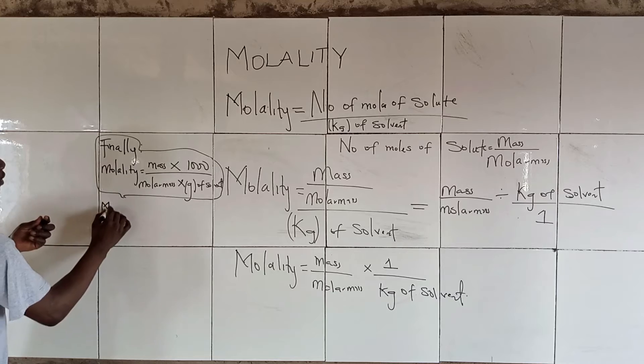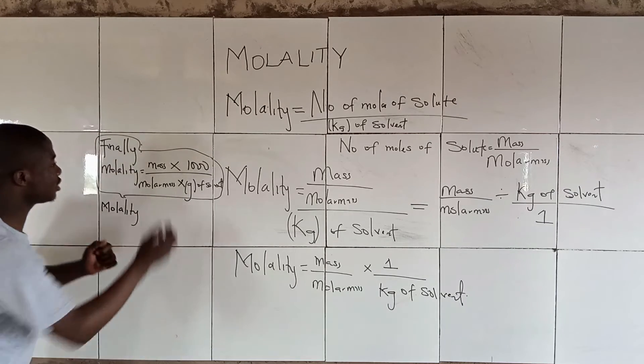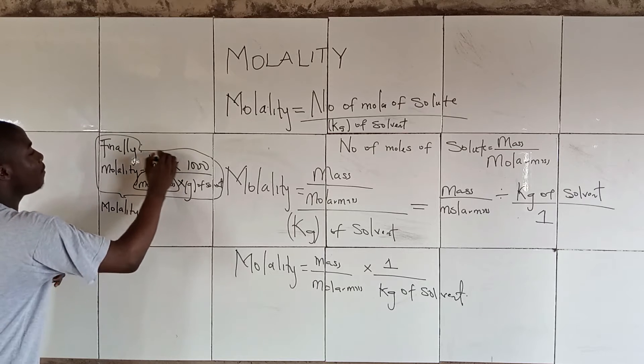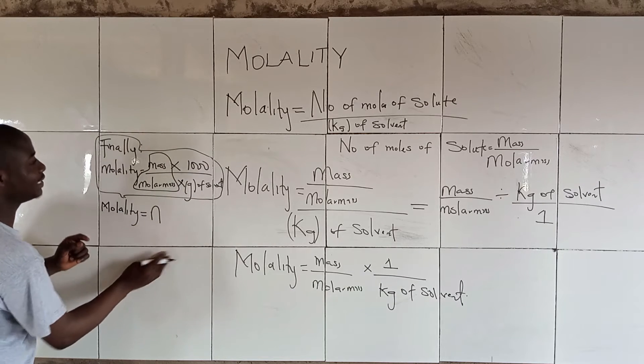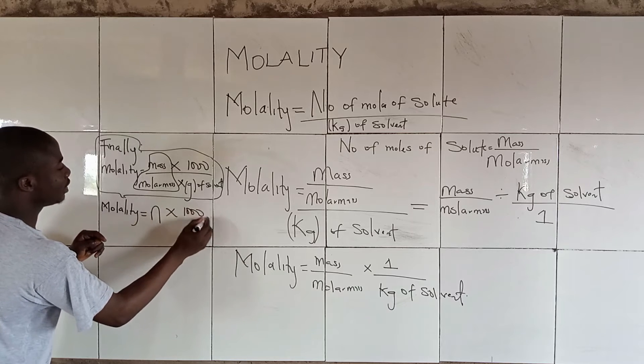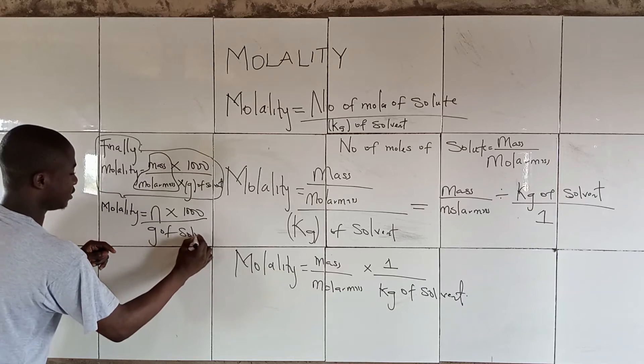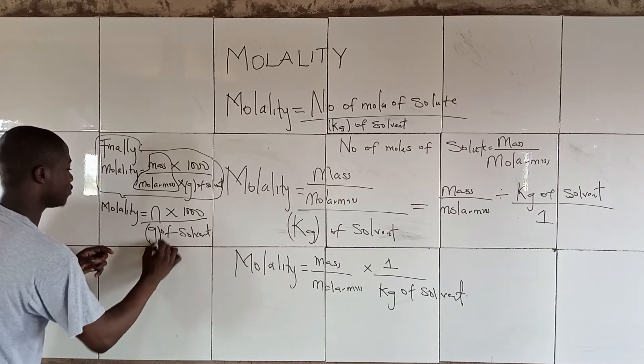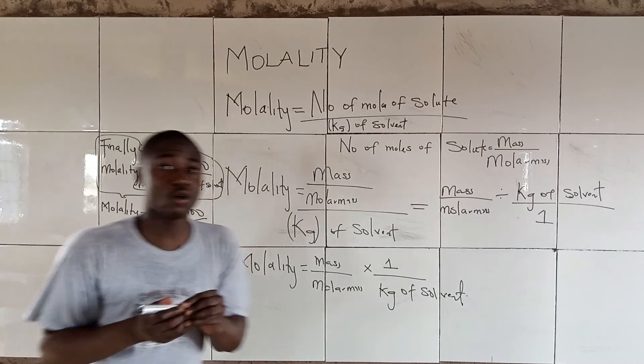If you recall from mole concepts, mass over molar mass gives us number of moles. So the molality is simply n which is number of moles times 1,000 over grams of solvent. So this is simply different formulas for solving molality.